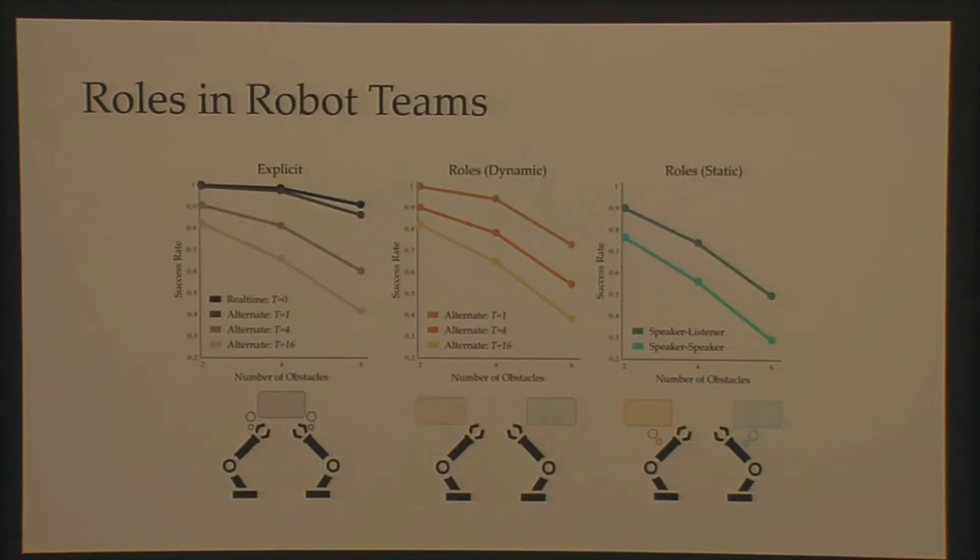And then sort of between these two extremes along the spectrum is this team that communicates by changing roles. And these teams are changing roles either maybe once every time step, once every four time steps, so on and so forth. And what we saw that's interesting here is that teams that change roles actually are able to achieve about the exact same success rate as teams that explicitly communicate by sending messages. So roles can be quite effective. Just using actions and the information that's contained within actions can be quite effective as a learning tool during these collaborative tasks.